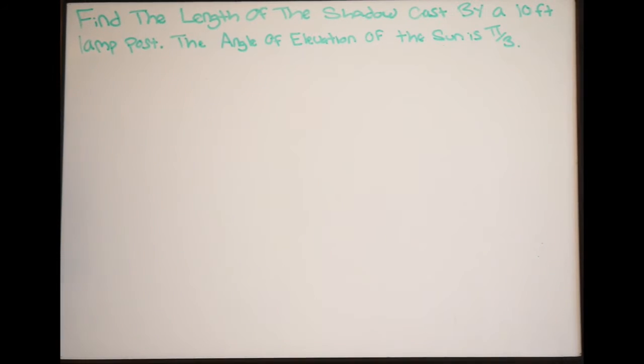Okay, so in this example, we're going to have to use our knowledge of trig functions in order to solve this problem. The word problem says, find the length of the shadow cast by a 10-foot lamppost. The angle of elevation of the sun is pi over 3.